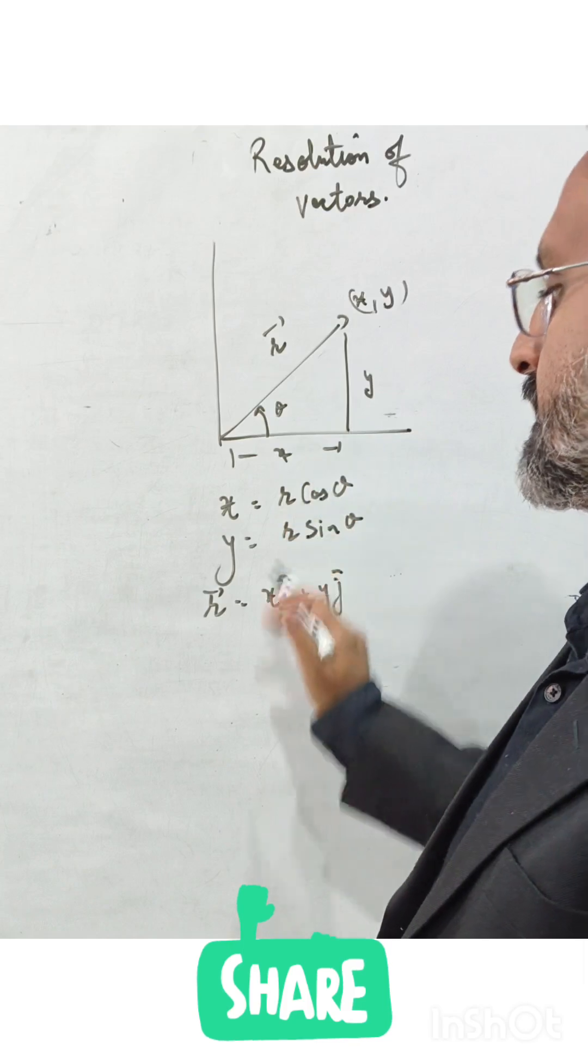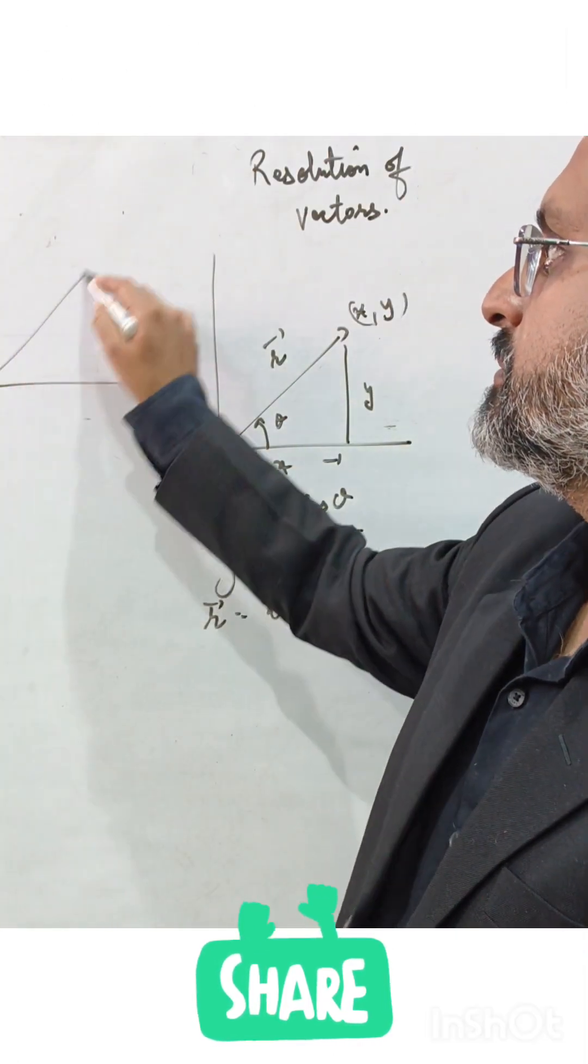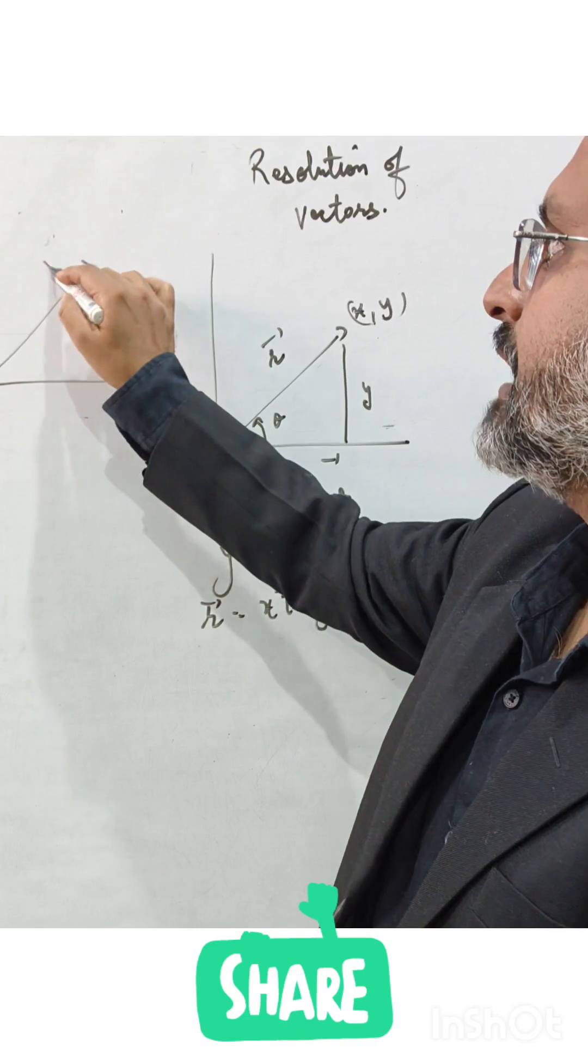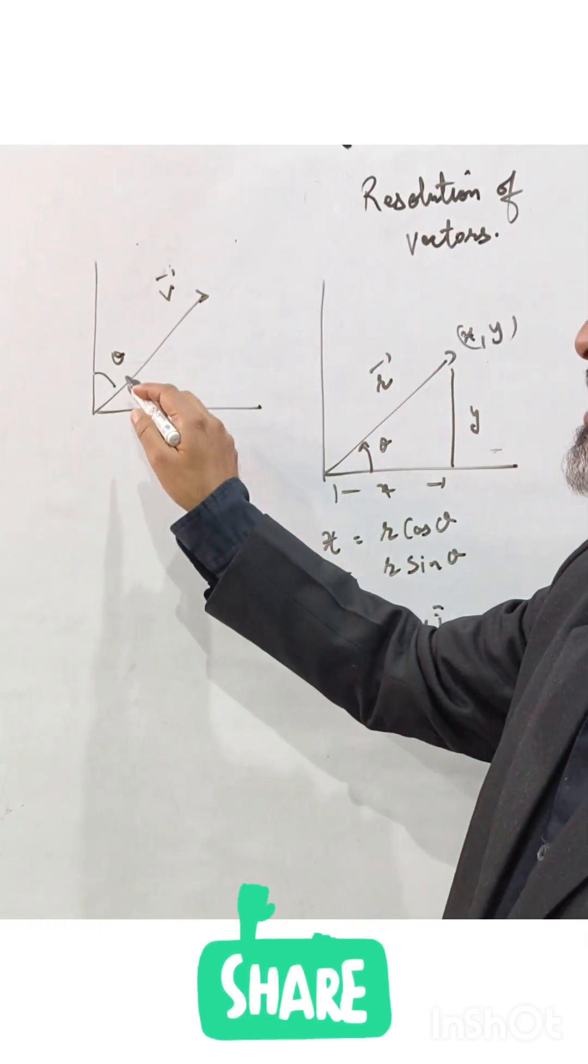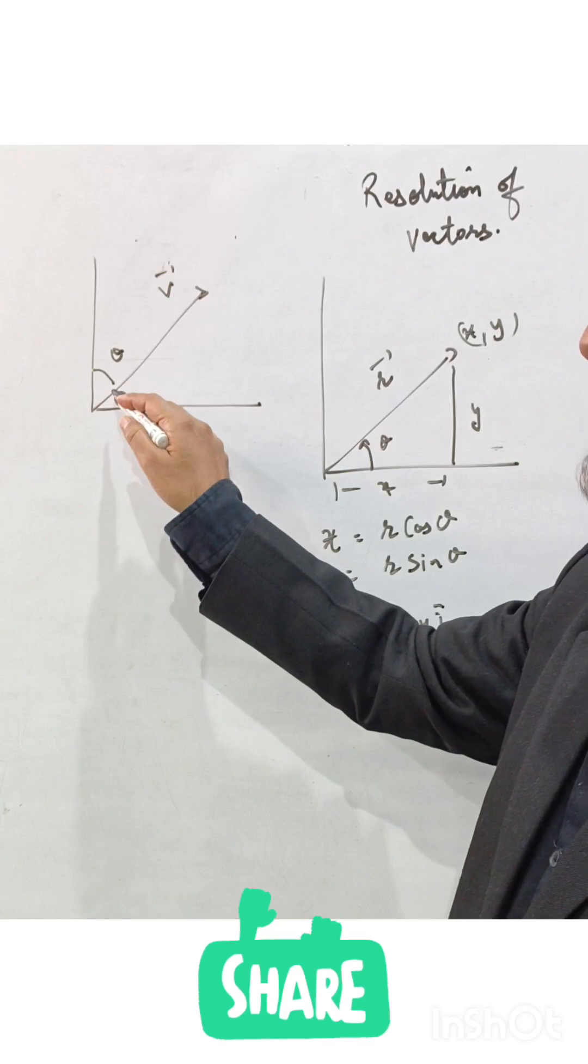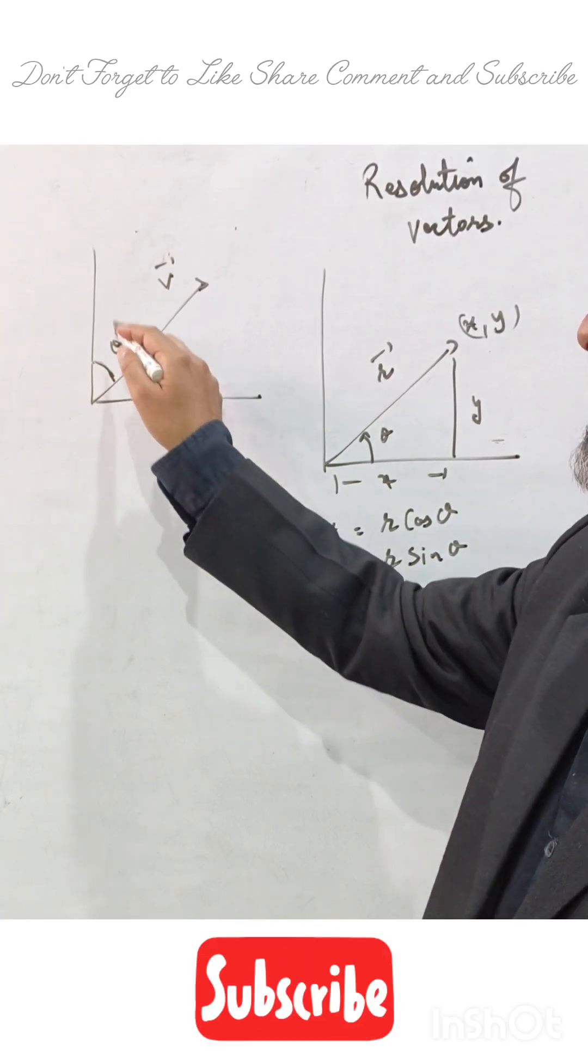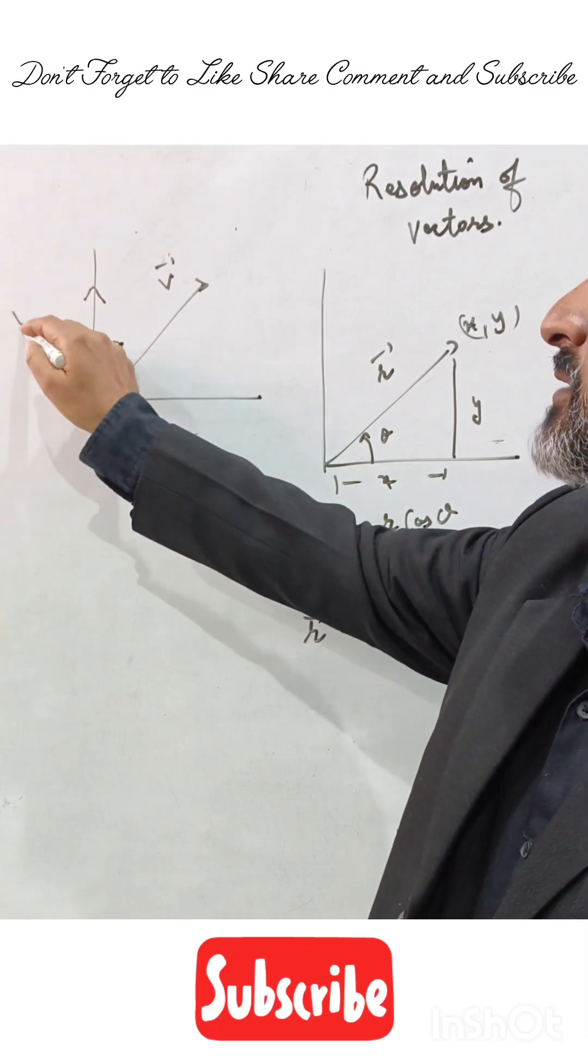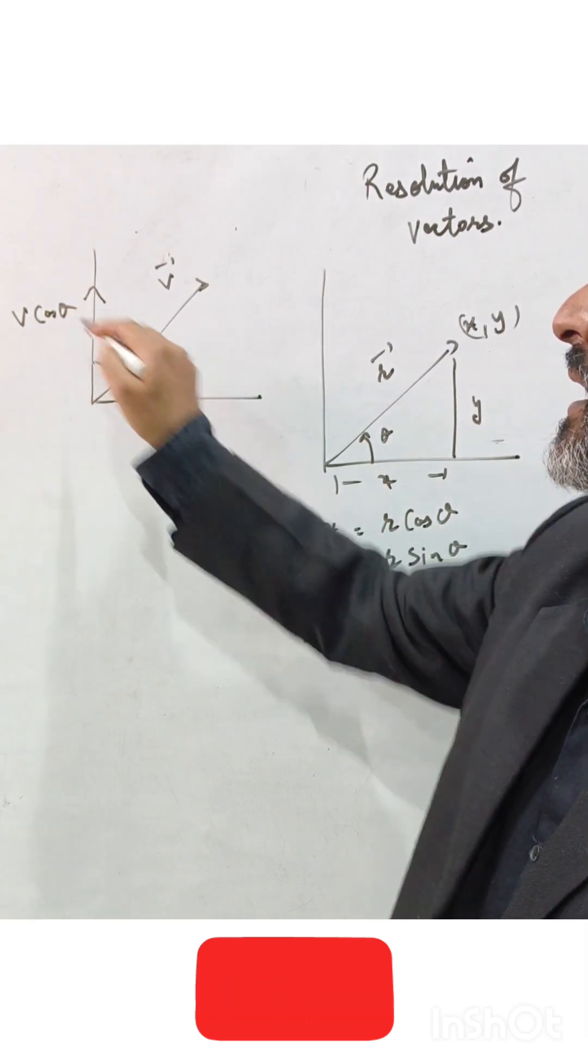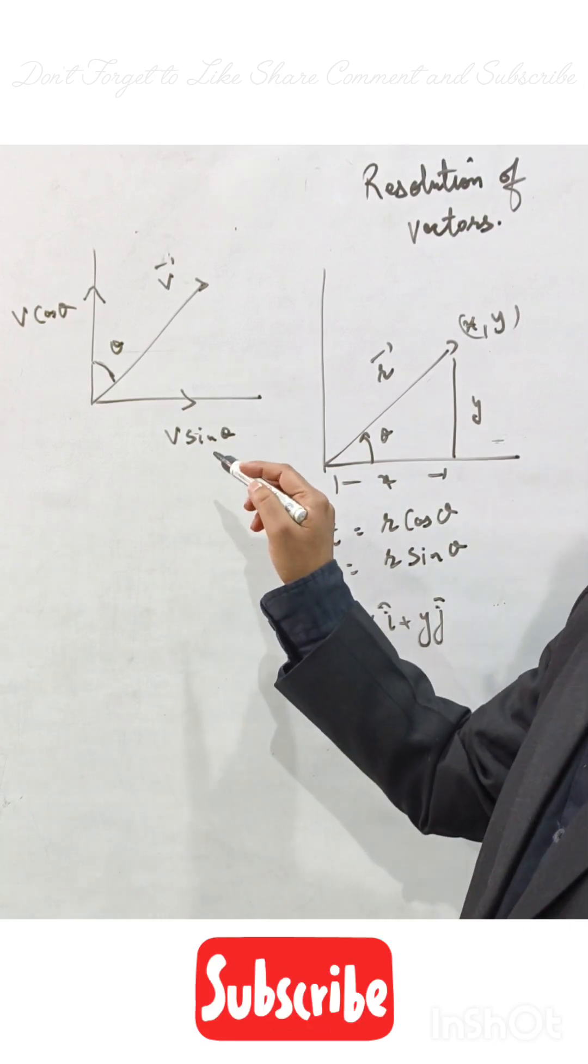We can similarly resolve a vector into a number of components. But remember, if this is a velocity vector inclined at an angle theta with the y-axis, the cosine component is always adjacent to the angle. Remember this: this will be v cos theta and this component will be v sine theta. This is how we resolve the components.